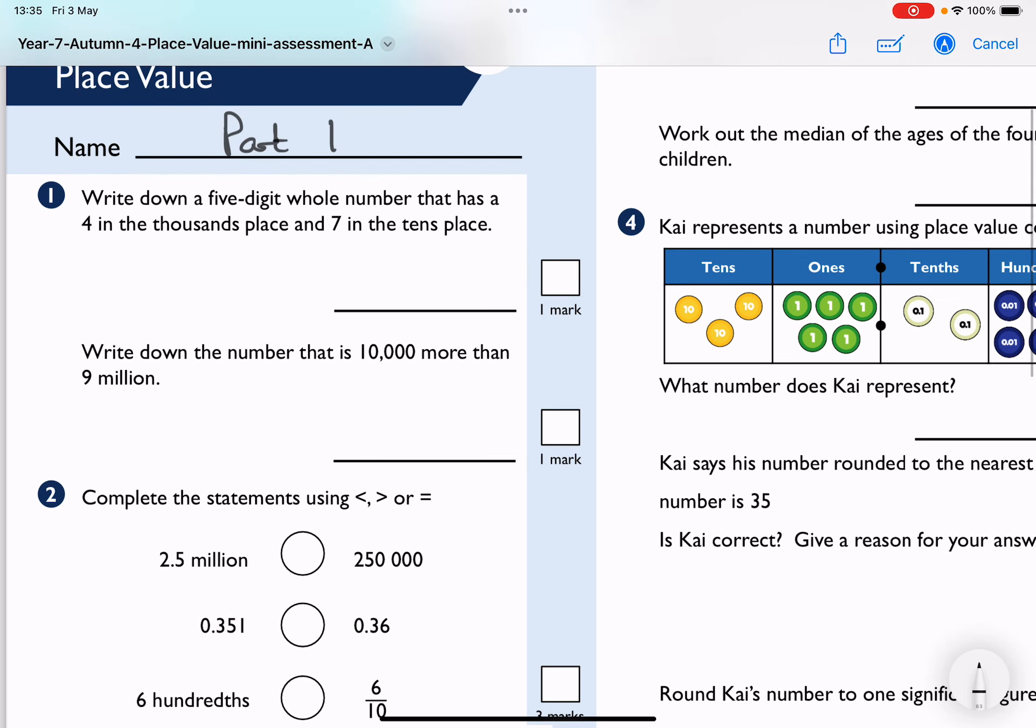Write down a 5-digit whole number that has a 4 in the thousands place and 7 in the tens place. Well, if we think we have units, so first I'm going to put down a unit, any number I want, which is the 3. You could have chosen 0 all the way up to 9. And then I know the next column is the tens, so I've got to put my 7 in the tens column. So there's the ones for the units, here's the tens column.